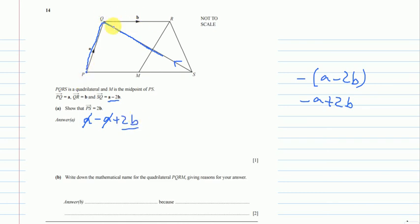And Q to R is also B. So this is B and this is B. And M is the midpoint of PS. We haven't used it, so we will use it now.